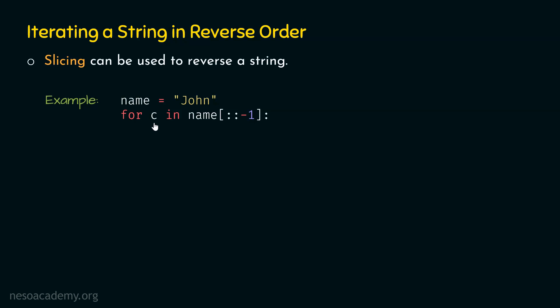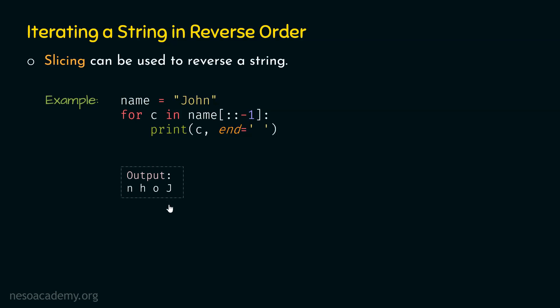Now we just want to print those characters. After executing this code, we will get this output: N, H, O, and then J. In this way, we can access each character of a string in reverse order. I hope this concept is clear.